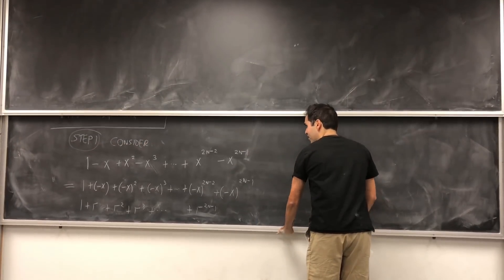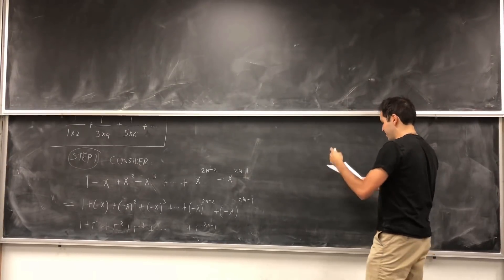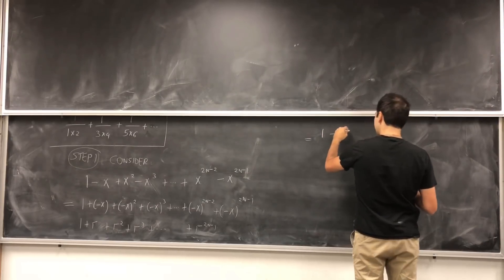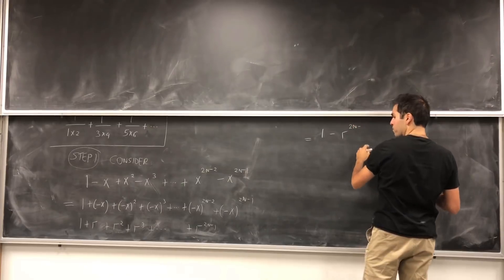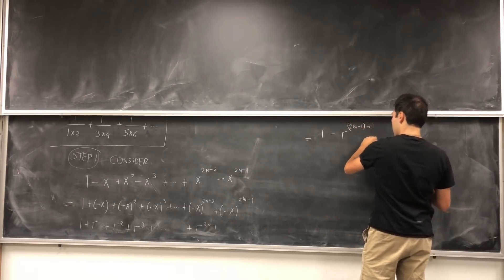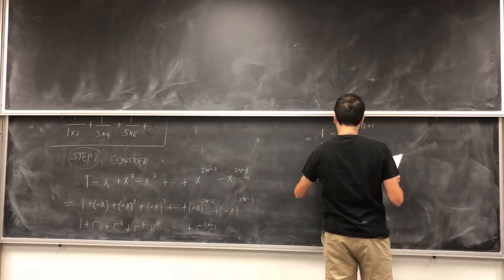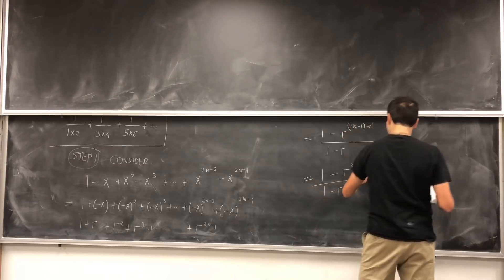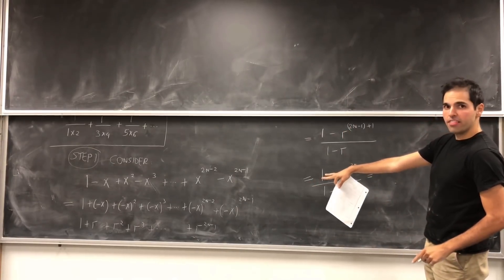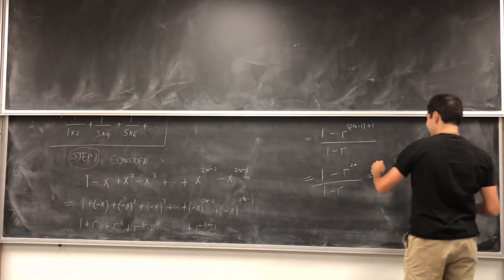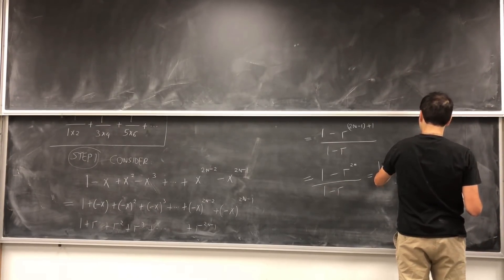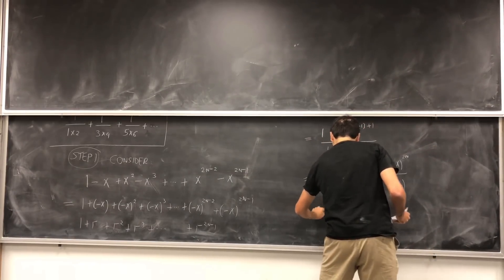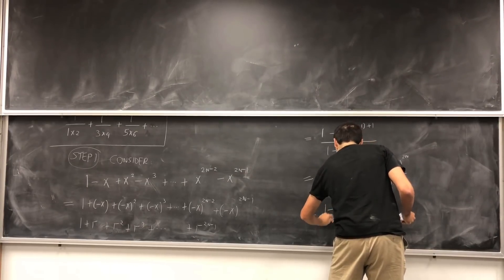There's a neat formula for the sum of the terms of a geometric series: it's 1 minus r to the 2n minus 1 plus 1, over 1 minus r, which is 1 minus r to the 2n, over 1 minus r. So r, if you compare, this is just minus x, so we get 1 minus (minus x) to the 2n, over 1 plus x. In fact, this becomes 1 minus x to the 2n, over 1 plus x.